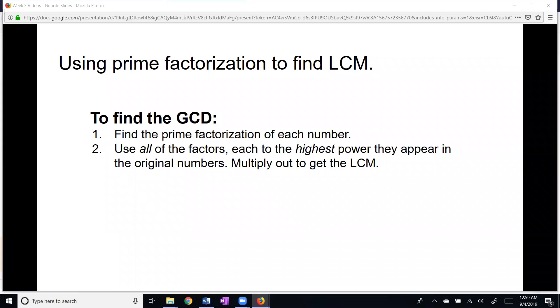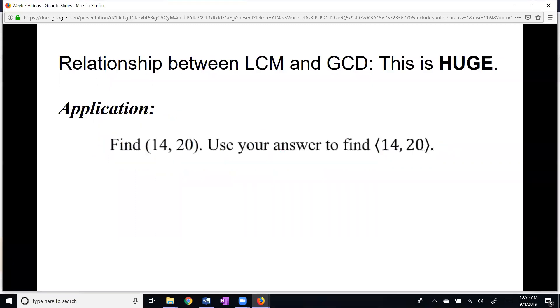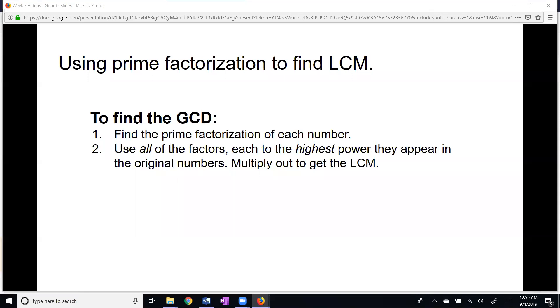Here's how we use prime factorization to find the least common multiple. First of all, find the prime factorization of each number. And I have a typo. This should be LCM.